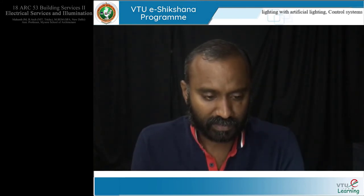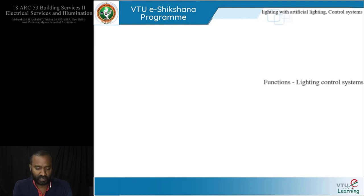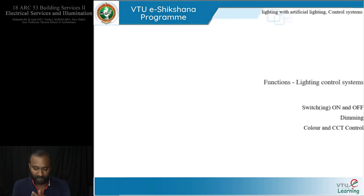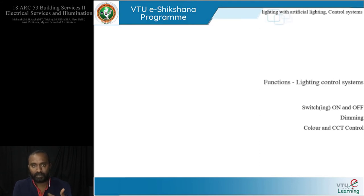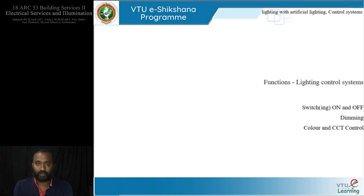At the end of this session, the functions of the lighting control system are: switching on and off, dimming, and color and CCT (correlated color temperature) control. I spoke about this with the example of reading and working — in work mode you have warmer colors; in reading mode you prefer cooler colors. CCT is correlated color temperature, relating to the Kelvin range in the visible spectrum.